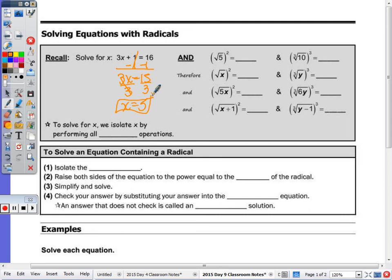So just calling on some random people, what do we get? Our volunteers. Okay, what is the square root of 5 squared, Edna? 5. What about the cube root of 10 cubed, Mike? 10.